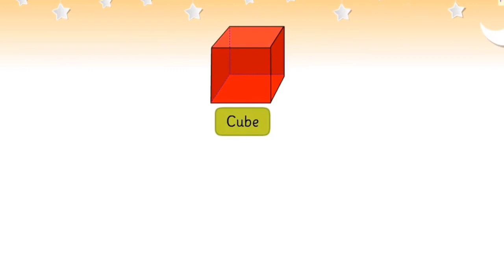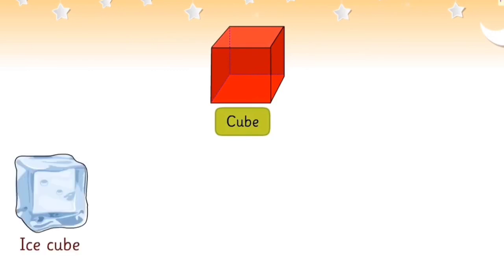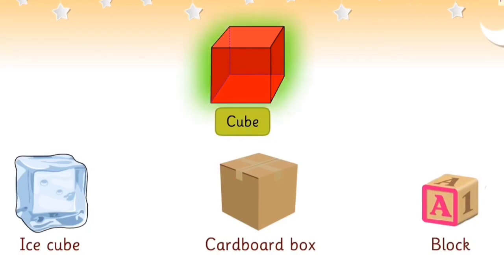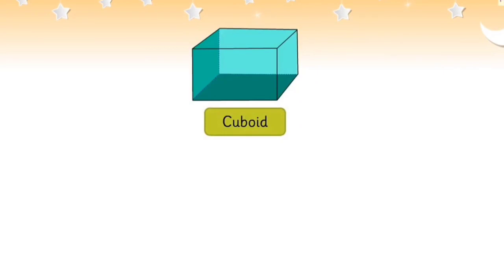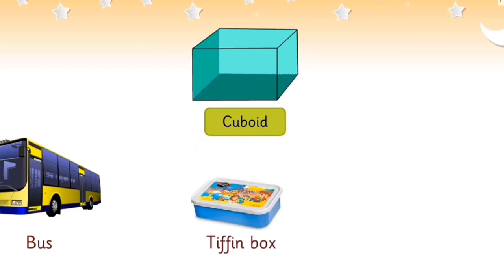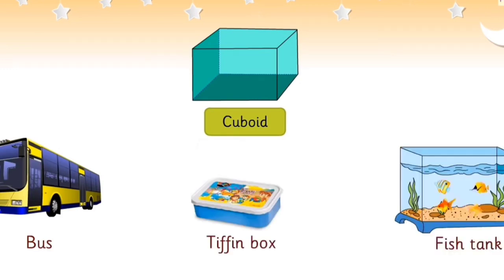This is a cube. An ice cube, a cardboard box, and a block are all examples of a cube. This is a cuboid. A bus, a tiffin box, and a fish tank are all examples of a cuboid.